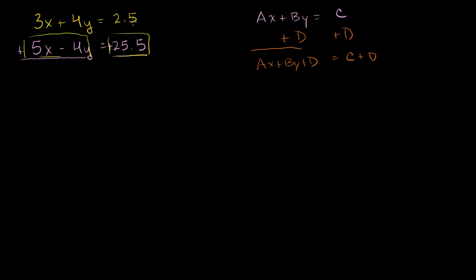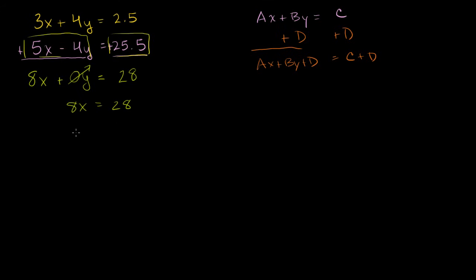Let's do it. Adding the left-hand sides: 3x plus 5x is 8x. And 4y minus 4y — this was the whole point — I saw a 4y and a negative 4y, so they cancel out, giving plus 0y. That term disappears. The right-hand side: 2.5 plus 25.5 is 28. So 8x equals 28. Divide both sides by 8: x equals 28 over 8, which simplifies by dividing numerator and denominator by 4 to give x equals 7 over 2.